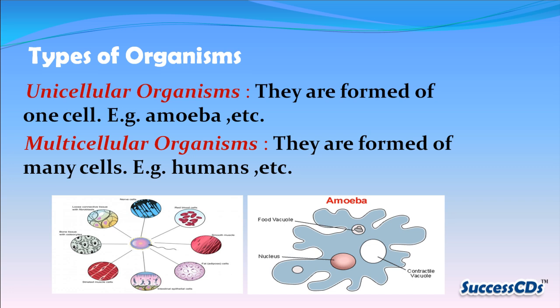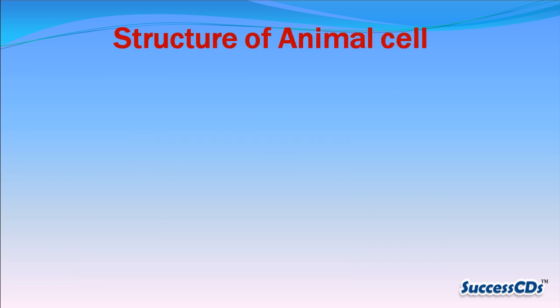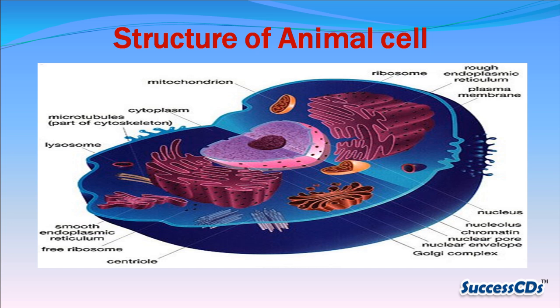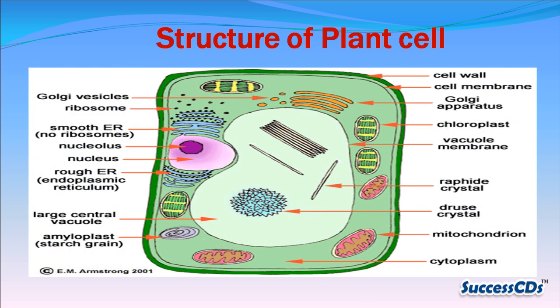Multicellular organisms are formed of many cells — examples include human beings. Take a look at the structure of an animal cell, and now the structure of a plant cell.